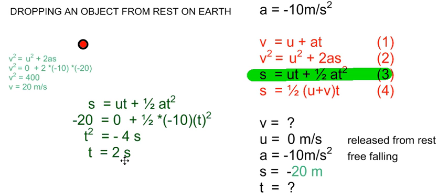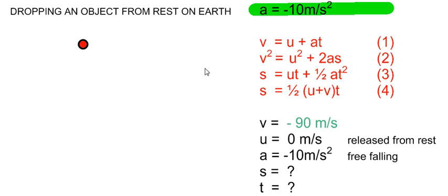Note that time is always a scalar — it can never be negative. So remember: if an object is in free fall, the acceleration is constant at negative 10 meters per second squared, and we can use the kinematics equations to describe its motion mathematically. The initial velocity of 0 meters per second and the acceleration always remain constant, and so V, S, and T vary together.